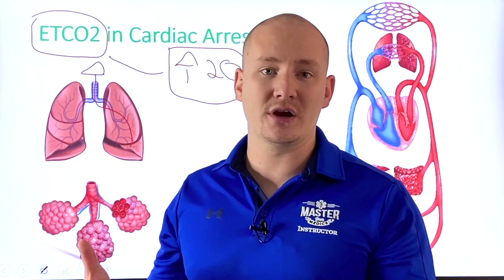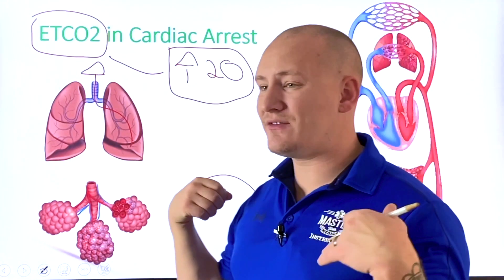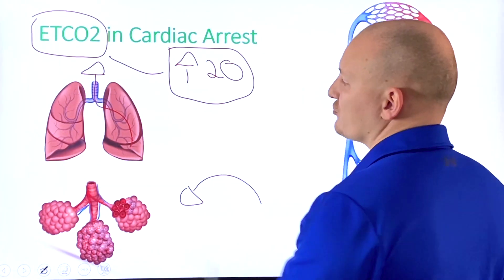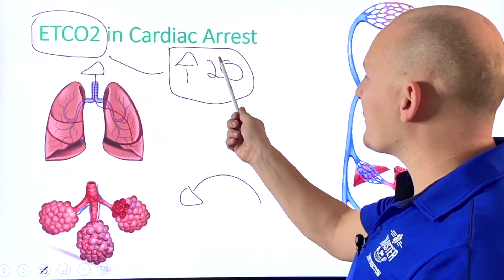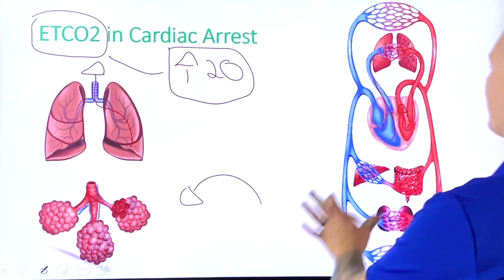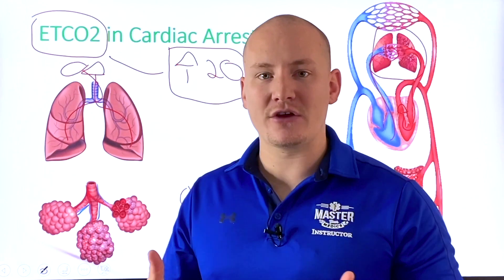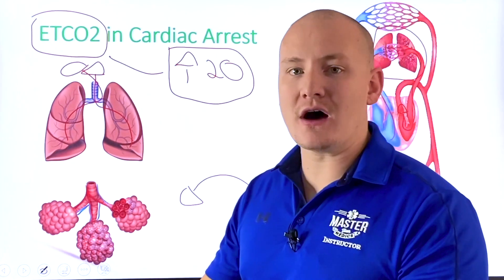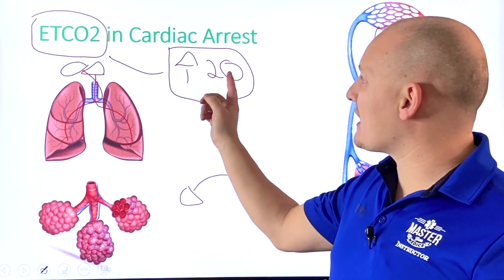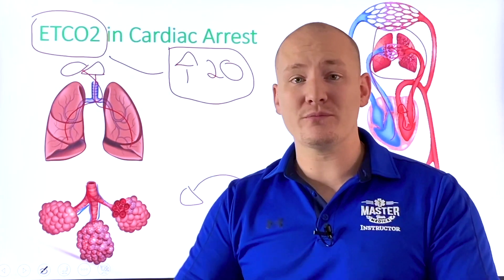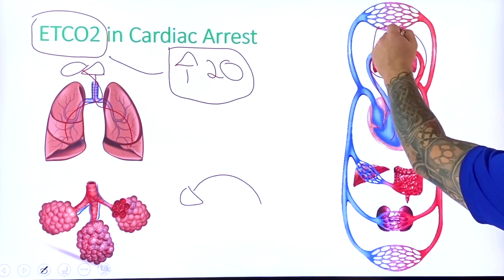If we have decent end-tidal CO2 being expired, it means our cells are still being oxygenated and going through cellular respiration — which tells us they're being perfused at least a little. Our CPR efforts are allowing blood flow through the lungs. The higher this number is during cardiac arrest, the better our perfusion is. It tells us two things: we have cellular respiration occurring, and we have good flow from CPR through the heart and lungs.